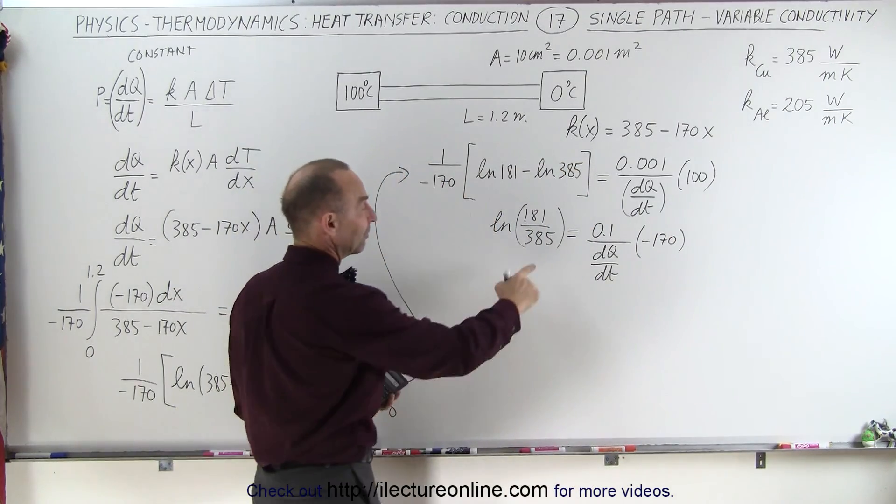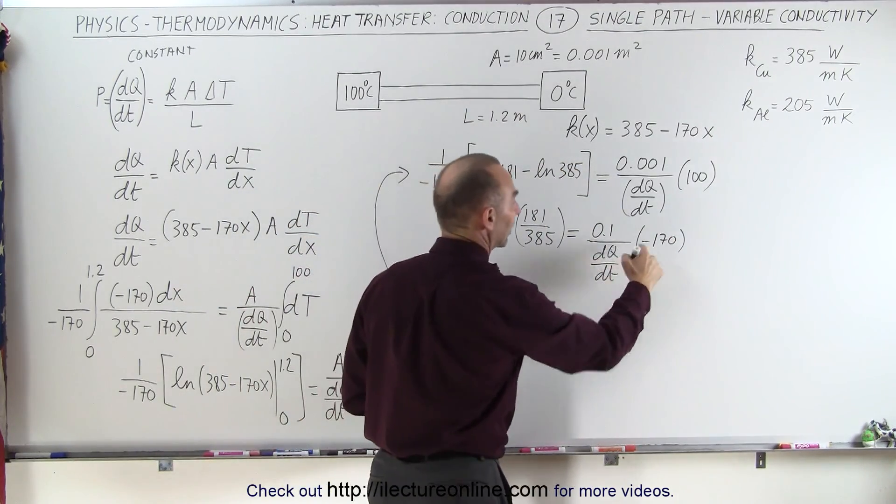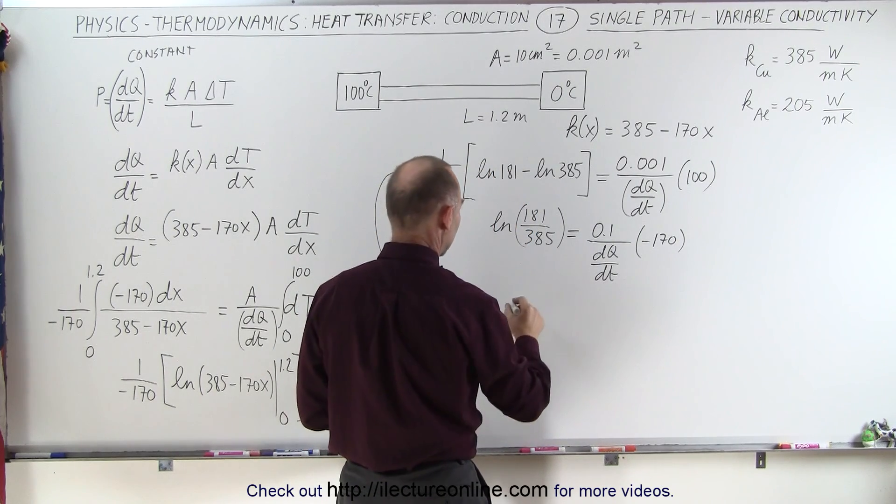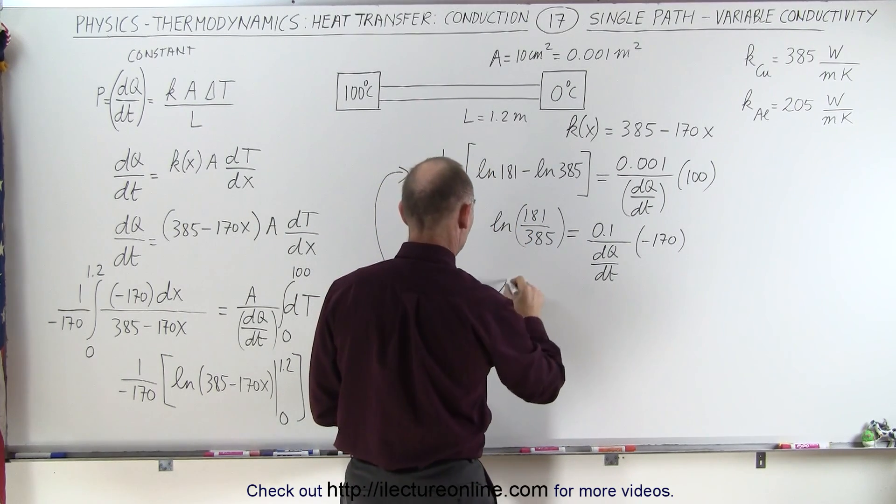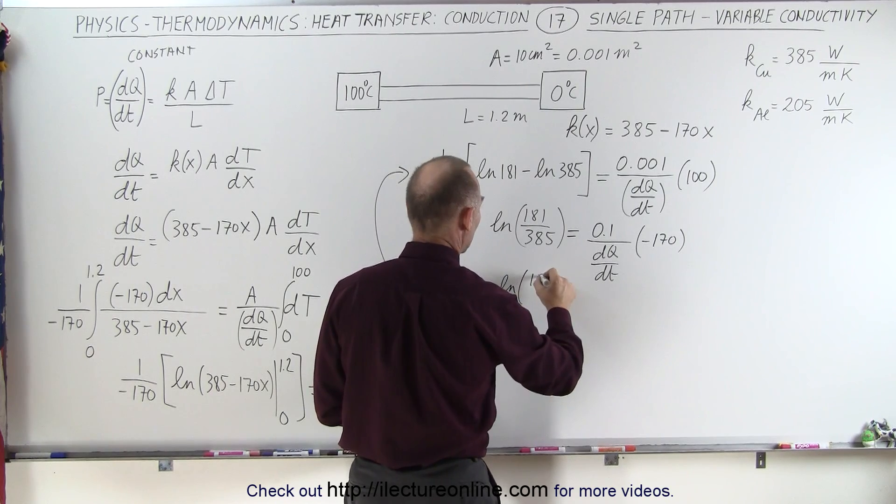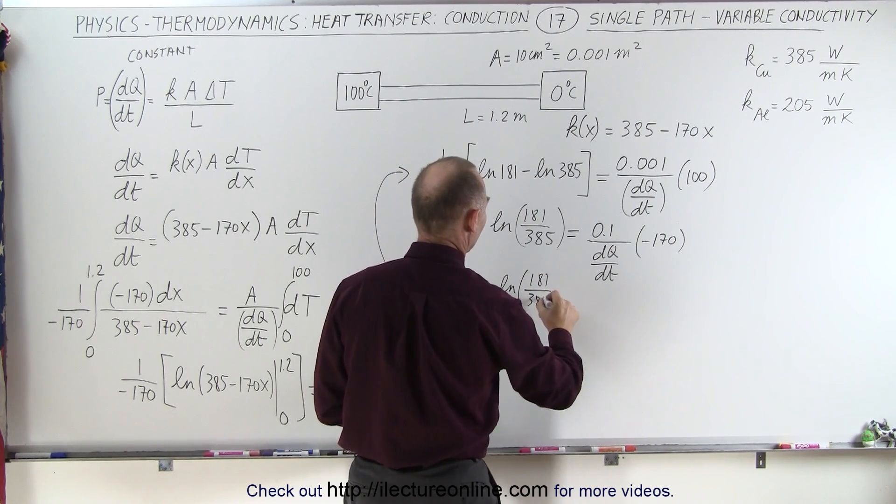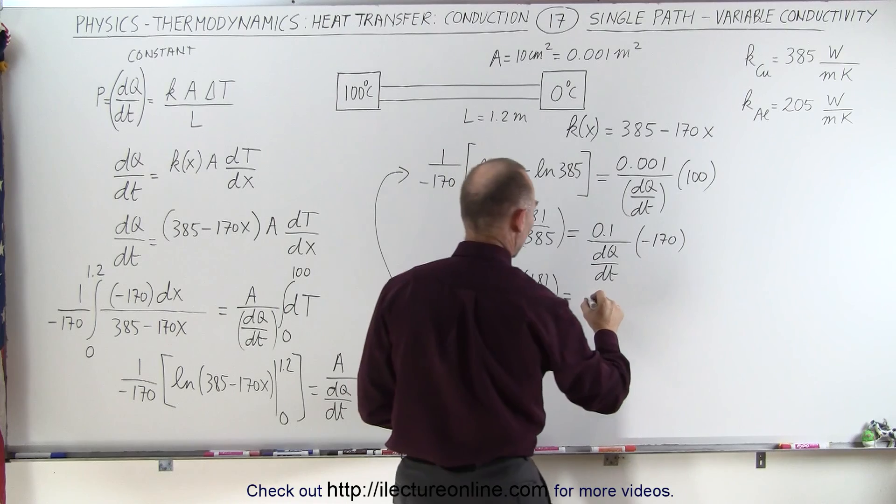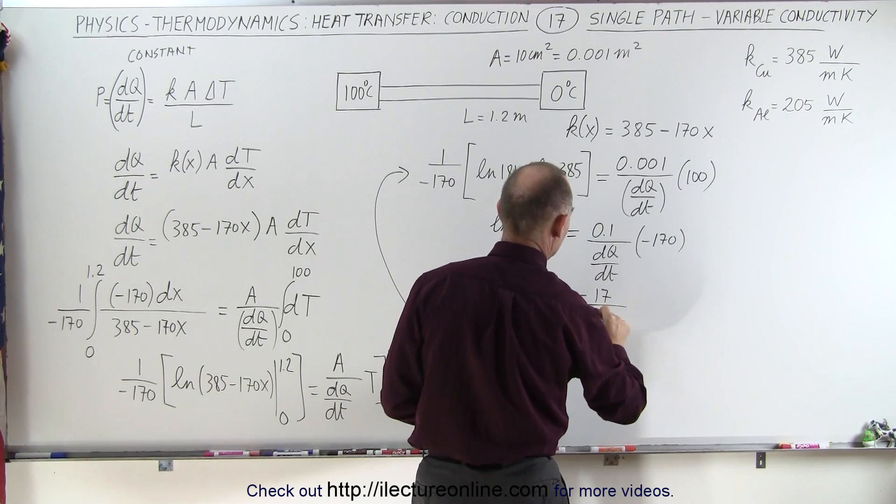And then you can see that the negative I get from here will cancel out the negative I get from there. All right, so now what we get is the natural log of 181 over 385 is equal to minus 17 divided by dQ/dt.